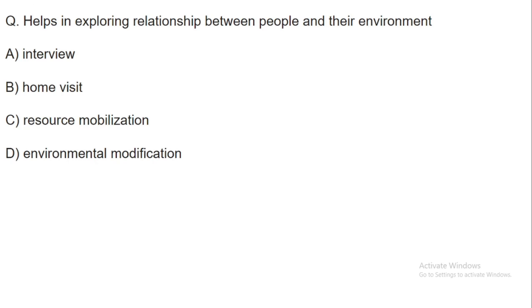Next question: Which of the following helps in exploring the relationship between people and their environment — interview, home visit, resource mobilization, or environmental modifications? The right answer is home visit. A home visit helps you explore the relationship between the individual and their environment.